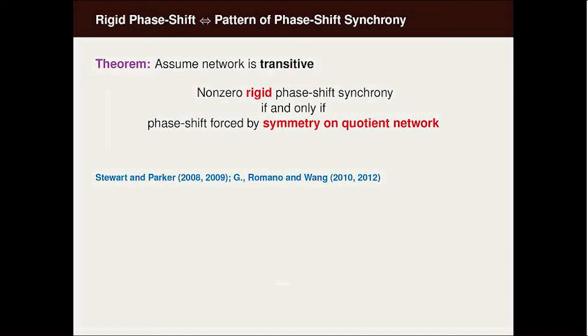The theorem I want to talk about is that if you have a transitive network, or a path connected network depending on which term you prefer, non-zero rigid phase shift synchrony is possible if and only if the phase shift is forced by symmetry on a quotient network. The rest of the talk will be trying to explain what these words mean in the context of this theorem.